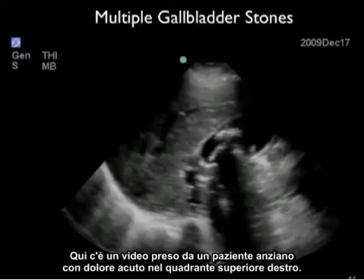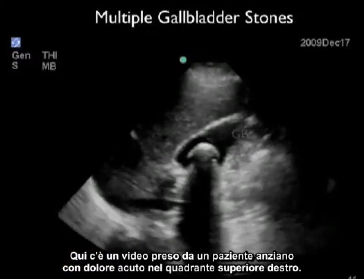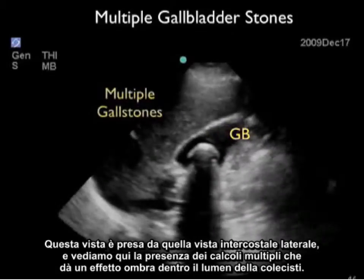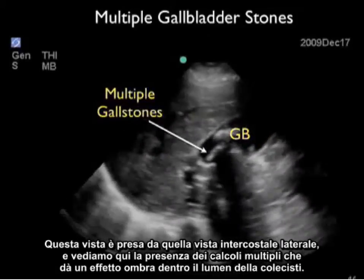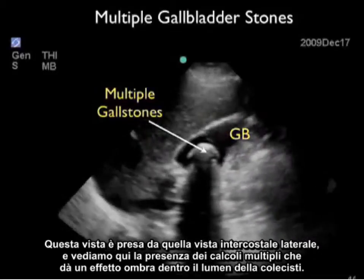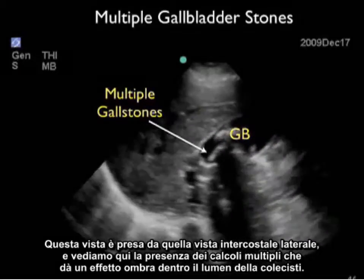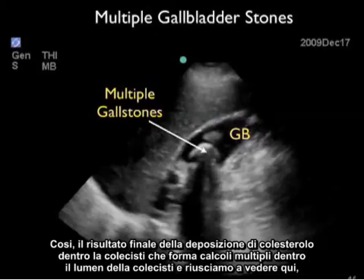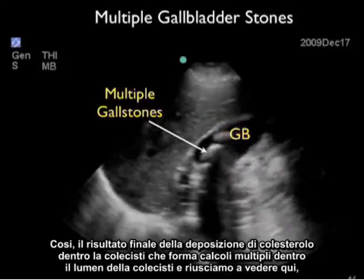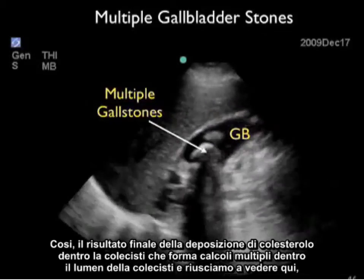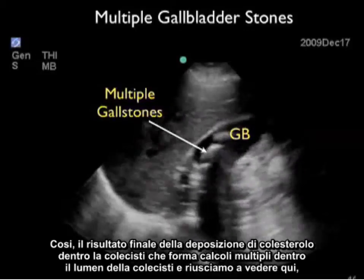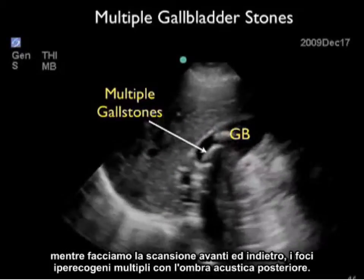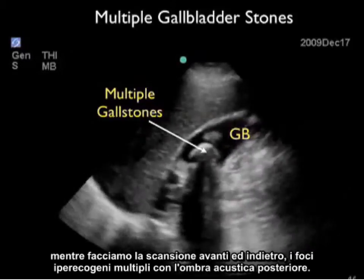Here's a video clip from an elderly patient with acute right upper quadrant pain. Scanning back and forth through the gallbladder from the lateral intercostal view, we see multiple shadowing gallstones within the lumen — the end result of cholesterol deposition forming multiple stones. We can see the multiple hyperechoic foci with posterior acoustic shadowing as we scan through.